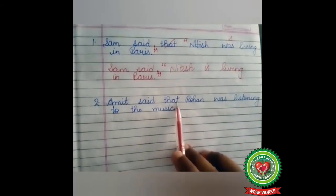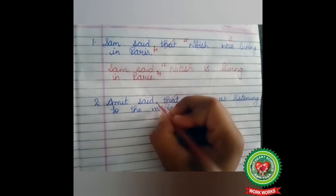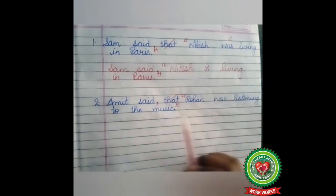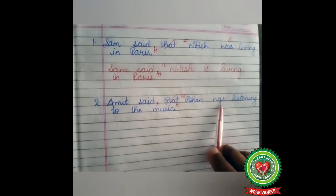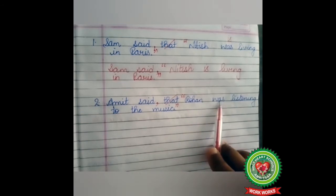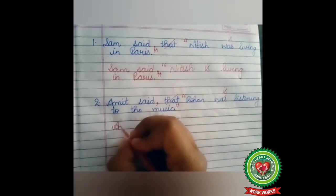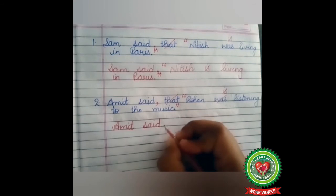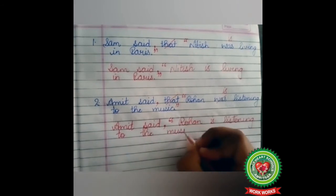Look at example number two. Amit said that Rohan was listening to the music. Here again we cut the word 'that' and put comma, inverted commas. The reporting verb is in past tense, so we can assume that earlier we had changed the tense of the reported speech. We reverse the rule — past continuous tense will change into present continuous tense. The rule of present continuous tense uses 'is' with Rohan. So our answer will be: Amit said, inverted commas, 'Rohan is listening to the music.' Full stop, inverted commas close.